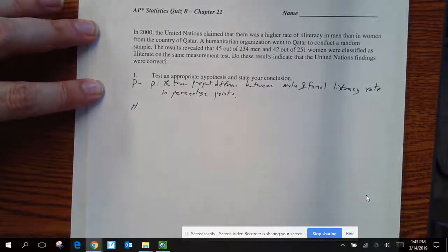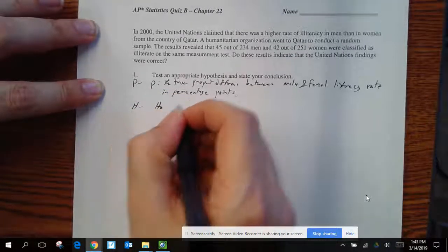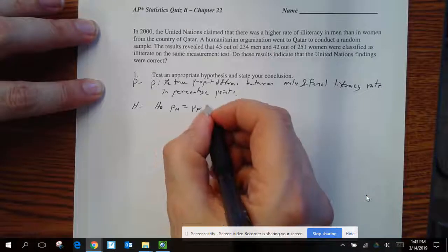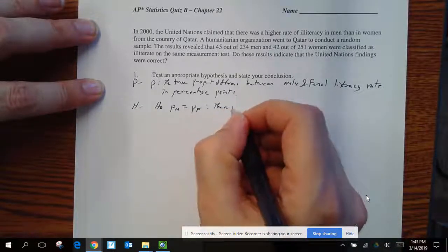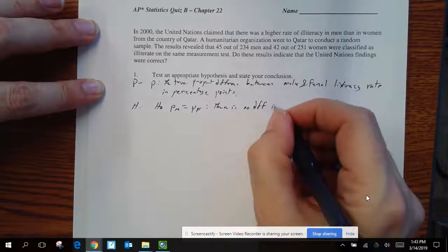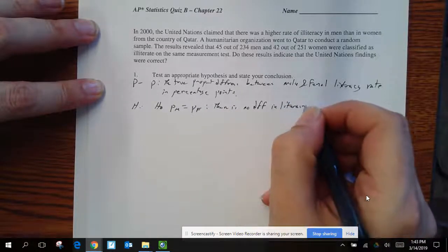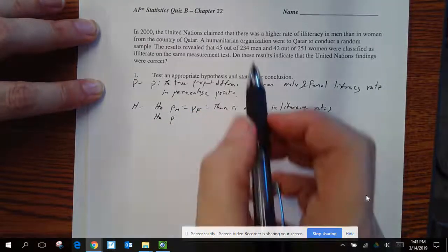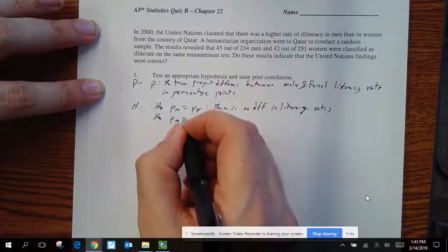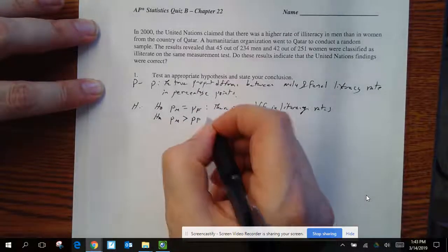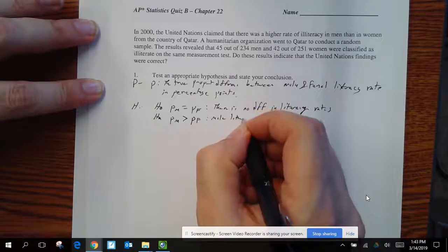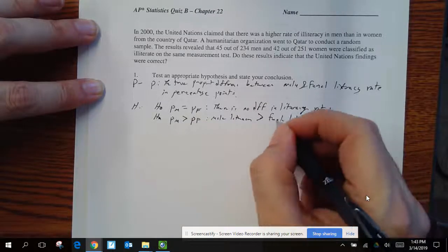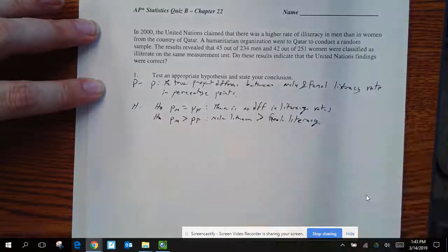H. So where are hypotheses? So my null hypothesis is that p male equals p female. And in words, there is no difference in literacy rates. Alternative hypothesis. Well, let's see. They claim they have a higher rate of literacy than women. So I'm going to say male is greater than female. Male literacy is greater than female literacy. And that's our hypothesis.